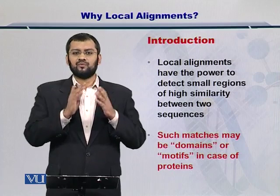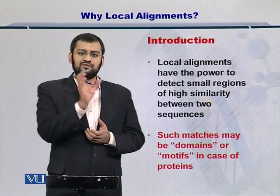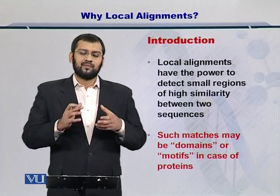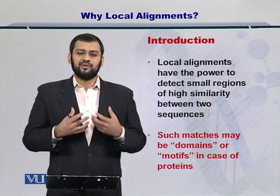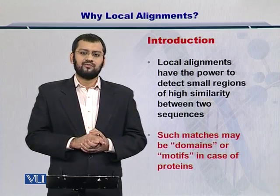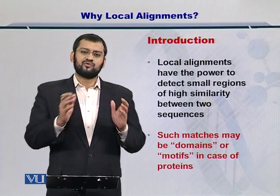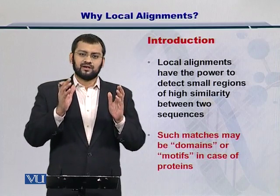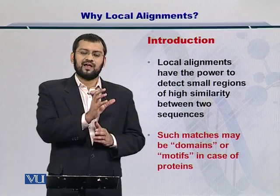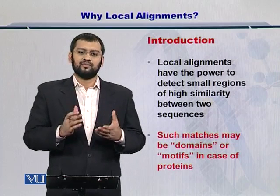In local alignments we don't do that. In local alignments we try to compare that portion of the smaller sequence as it is with the bigger sequence. The power of this comes from the fact that biological entities such as proteins have domains and motifs. Domains are functional units within a protein and therefore have a very high chance of being conserved across multiple proteins. So if a protein is composed of two domains, it is very possible that one of those domains exists exactly as it is in some other protein. Therefore local alignments can be very useful in searching domains and motifs.